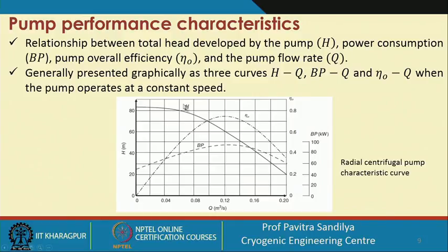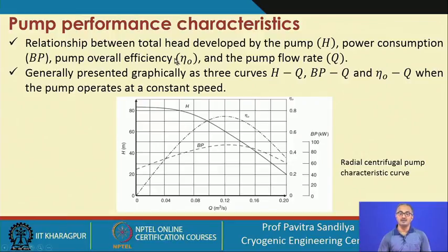Now we need to know the pump performance characteristics — the relationship between the total head developed by the pump, the power consumption, the overall efficiency, and the pump flow rate. When we correlate the energy given to the pump with the head developed, the efficiency, and the flow rate, these are called the pump characteristics. They are generally given in graphical form, plotting head versus flow rate, power versus flow rate, and efficiency versus flow rate when the pump operates at a constant speed.